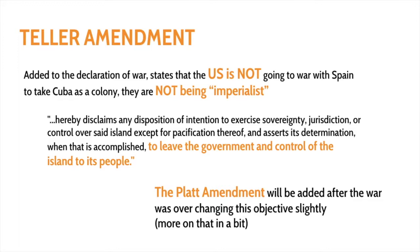The Teller Amendment literally says, quote, 'hereby disclaims any disposition or intention to exercise sovereignty, jurisdiction, or control over said island except for the pacification thereof, and asserts its determination when that is accomplished to leave the government and control of the island to its people,' end quote. So the Teller Amendment says we're going to go down there, basically remove the Spanish, and then it's up to the Cuban people to run their own government — done to pacify anti-imperialists and make a statement to the world.